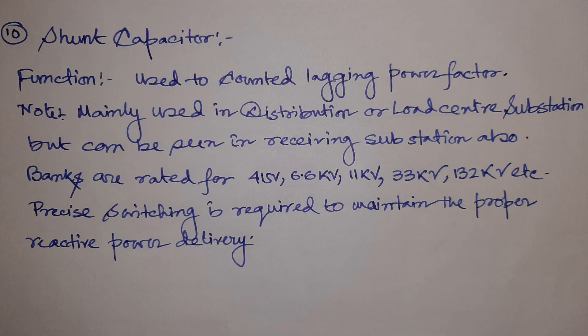The next equipment is the shunt capacitor, used for controlling lagging power factor. It is mainly used in distribution substations or load-center substations where large inductive loads such as induction motors cause the power factor to fall. Shunt capacitors deliver reactive power locally to improve the power factor. Capacitor banks are rated from 415 V to 132 kV, and precise switching between bank segments is required to maintain proper power factor.